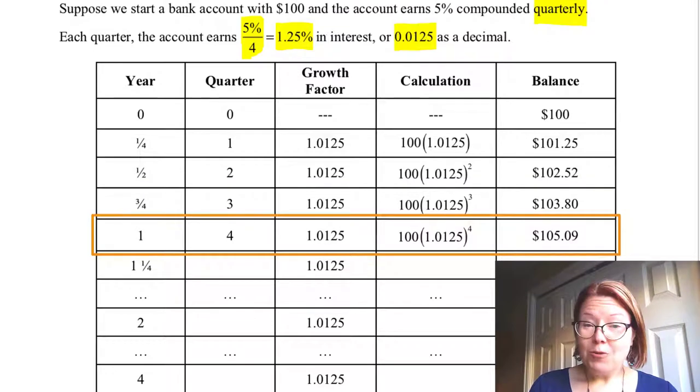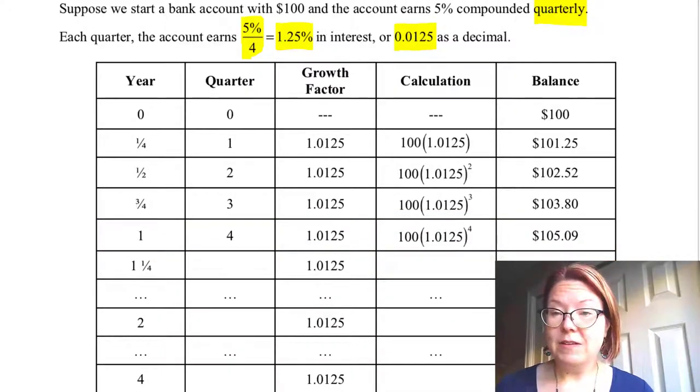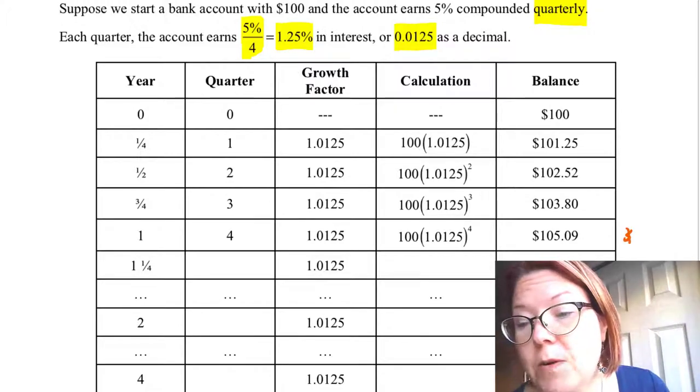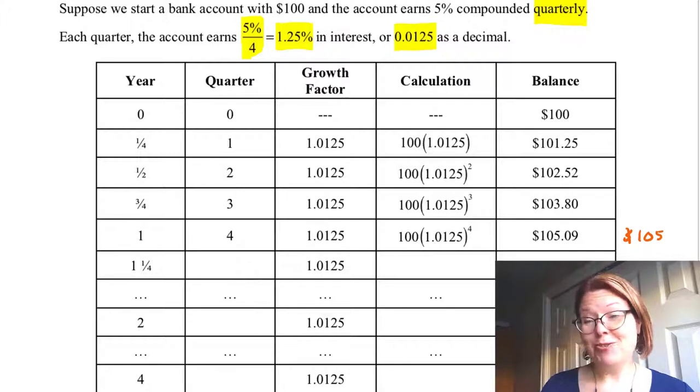In quarter four, we've finally gotten to the end of year one. The calculation is 100 times 1.0125 to the fourth power, or $105.09. Compare this to what we got from doing annually calculated interest, which was exactly $105. So we have managed to make nine extra cents here.